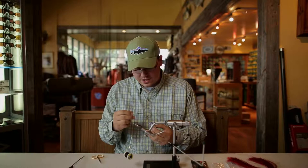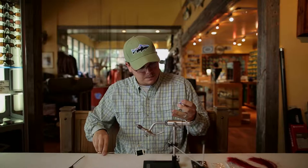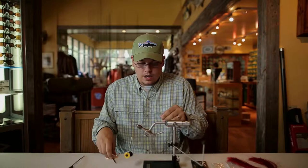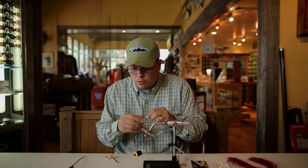And then the ribbing on this fly is going to be just your standard silver wire. This is in brassy size. You pick the size of wire that's going to complement the size of the fly. So for this one being a size 12 I use brassy. Anything smaller I'd probably go to a small wire.